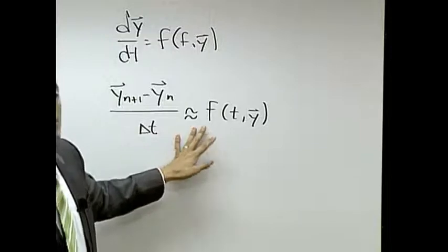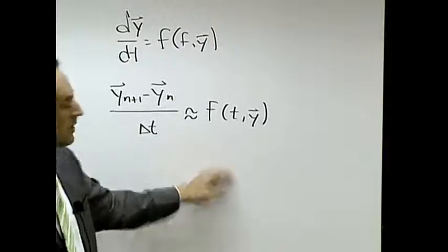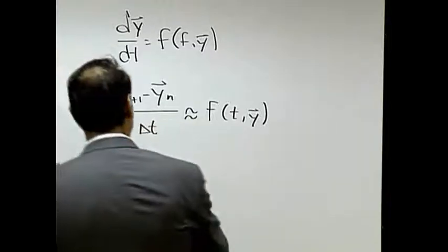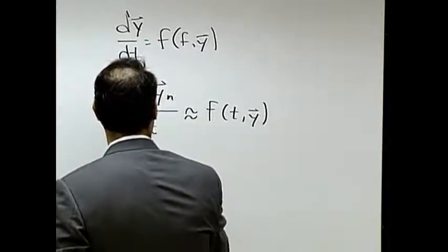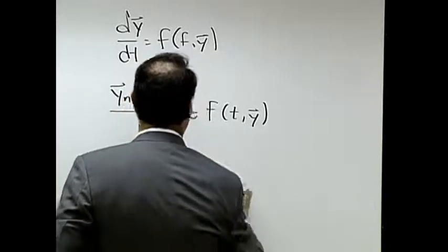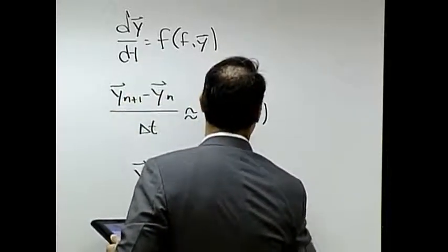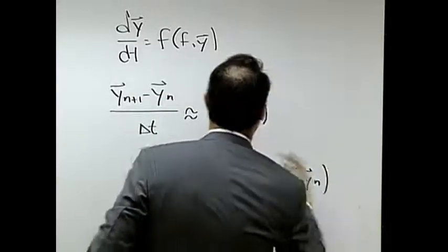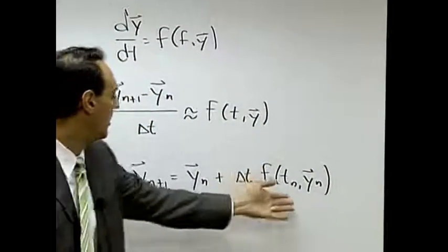Now notice what I can do with this. I can multiply by Delta t, I can move that to the other side, and what I end up with is y_n plus 1 is equal to y_n plus Delta t times f(t_n, y_n), and we'll evaluate this function at the current time.